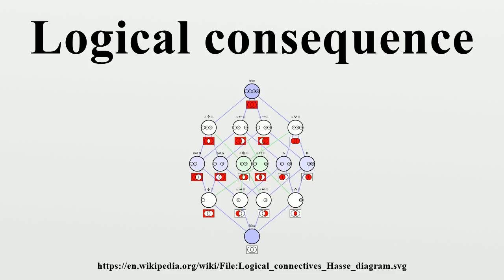A conclusion follows from premises if and only if it is impossible for an argument with the same logical form to have true premises and a false conclusion.